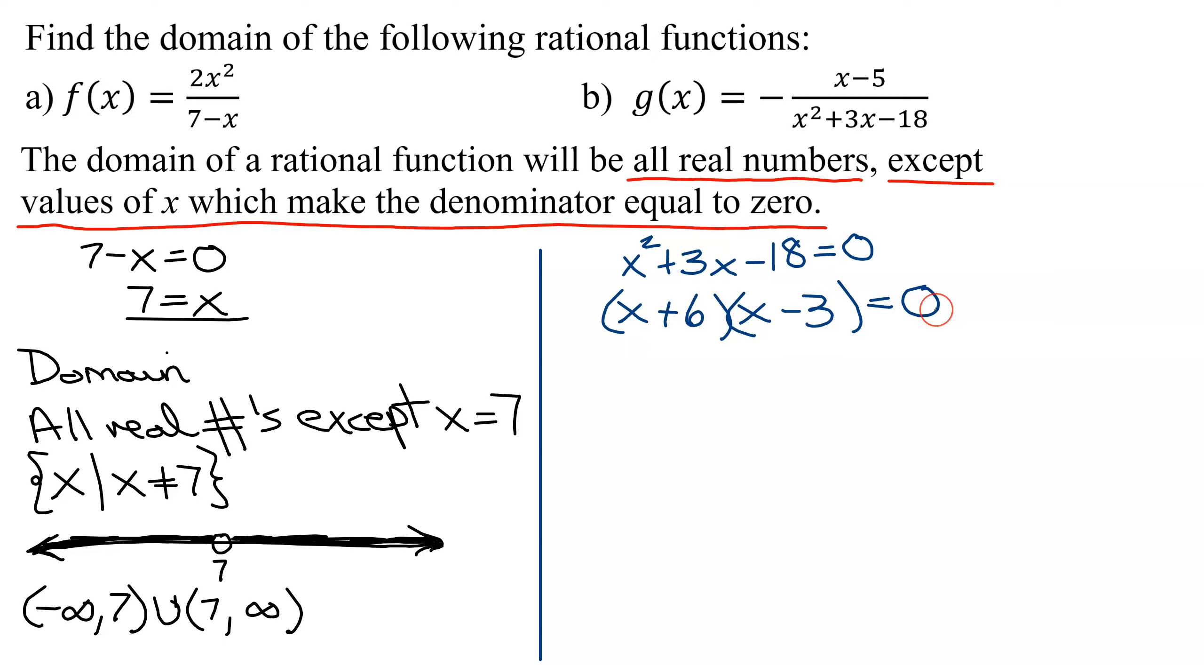Two binomials multiplied together equals 0. Using the zero factor property, we get x plus 6 equals 0 and x minus 3 equals 0. From the first one, subtract 6 from both sides, you get x equals negative 6. And from the second one, add 3 to both sides, you get x equals positive 3.